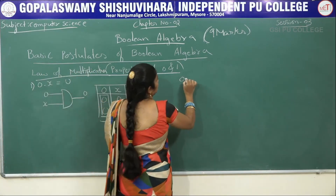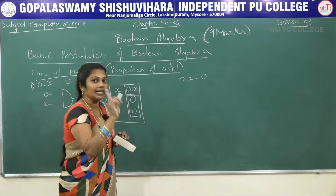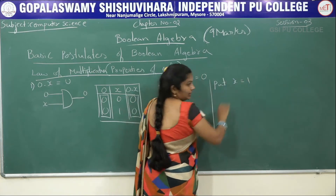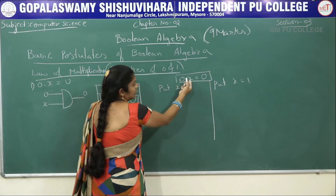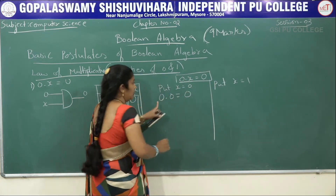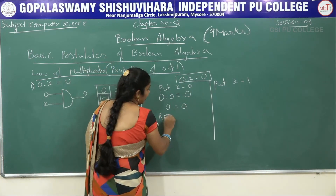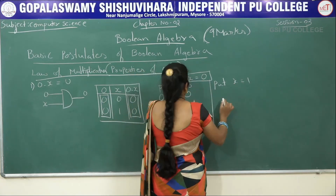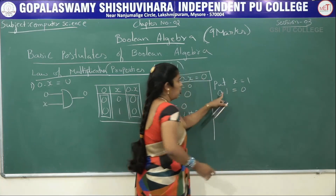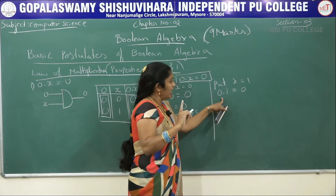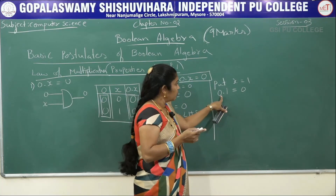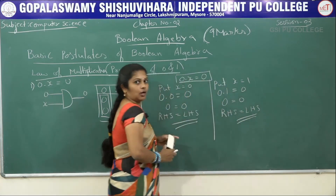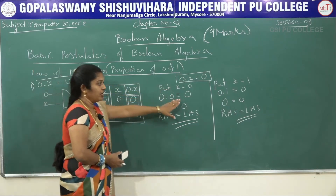Now solve 0 · x = 0 by perfect induction method. Put x = 0: then 0 · 0 = 0. With AND (dot), all inputs must be true for output to be true; here both are false, so output is 0. Right-hand side equals left-hand side. Put x = 1: then 0 · 1 = 0. One input is true and one is false, so output is 0. Right-hand side equals left-hand side.